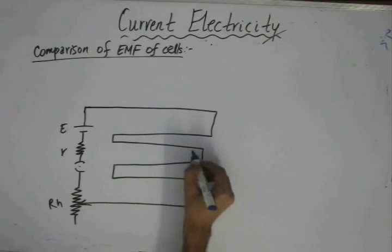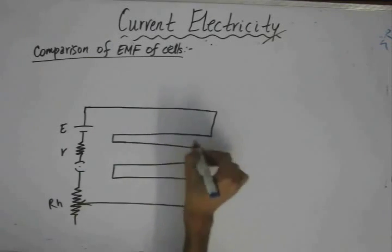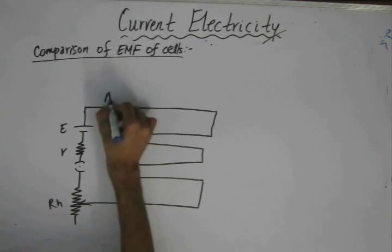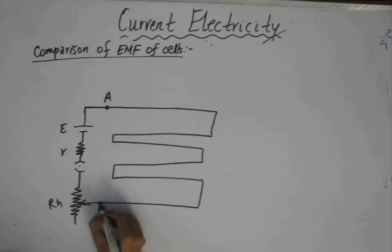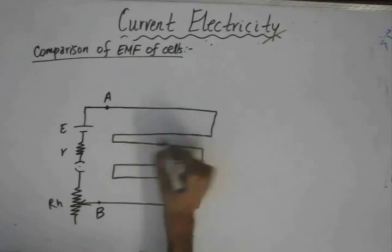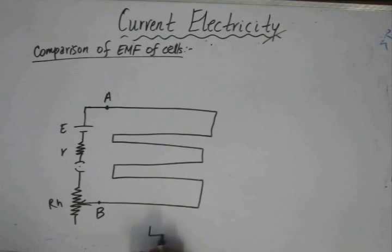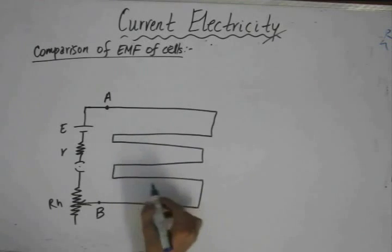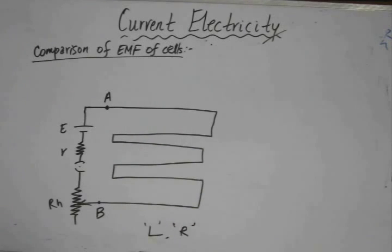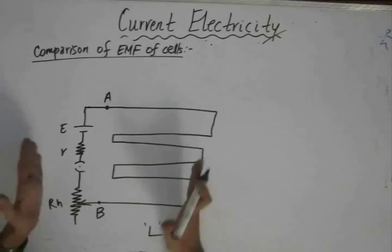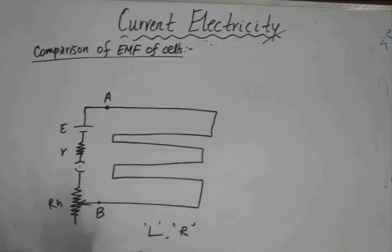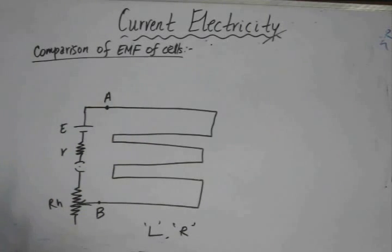The potentiometer wire is arranged so that the device is compact. The wire AB has a total length and resistance both denoted as capital R. This is the primary circuit, just drawn in another way. Now we need to compare the EMF of cells.